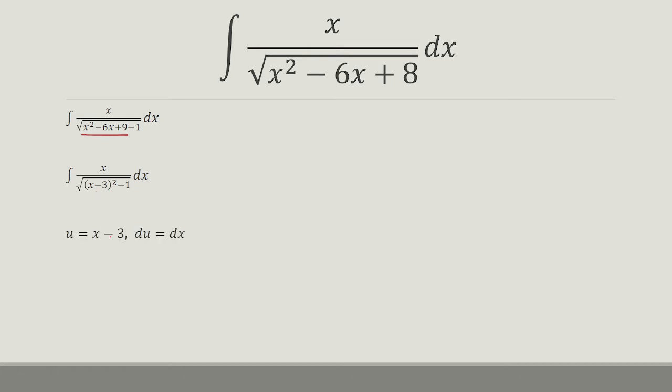Now let's do a u substitution. We'll let u equal x minus 3. So du is dx. And if I add 3 to both sides, I get u plus 3 is equal to x. And so that's going to go in the numerator of the fraction. Then we have the square root of u squared minus 1 and then du.